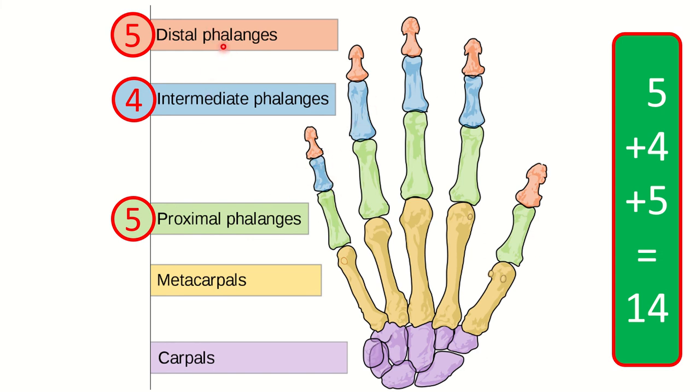They are this, and then distal phalanges with these colors. So from here we can see the carpal bones and metacarpal bones. This group of bones and this group of bones, they are not included in the phalanges.